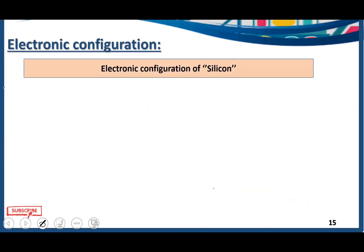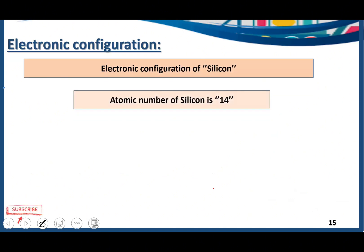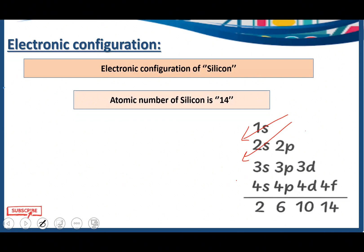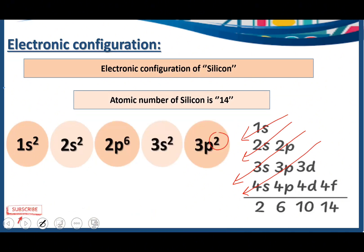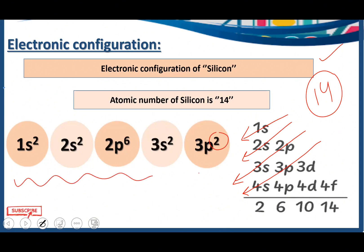Electronic configuration of silicon — atomic number 14. We write 1s2, 2s2, 2p6, 3s2 — done with 12 electrons. Then 3p2: 12+2=14. Always remember, in the p subshell we can accommodate 6 electrons or fewer, but never more than 6. The electronic configuration of silicon is 1s2, 2s2, 2p6, 3s2, 3p2.